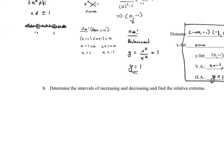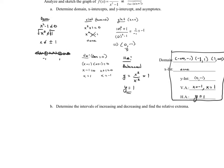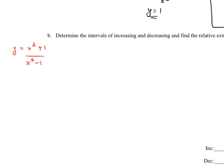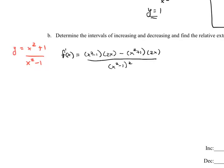Now let's look at intervals of increasing and decreasing and any relative extrema. The function is f of x equals x squared plus 1 over x squared minus 1. Since it doesn't simplify, we use the quotient rule. The derivative f prime of x equals the bottom, x squared minus 1, times the derivative of the top, 2x, minus the top, x squared plus 1, times the derivative of the bottom, 2x, all over the bottom squared, which is x squared minus 1 quantity squared.